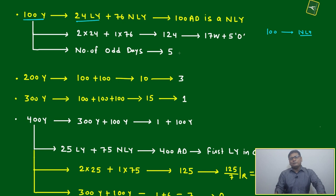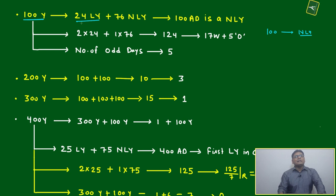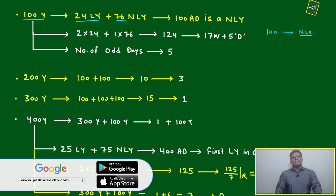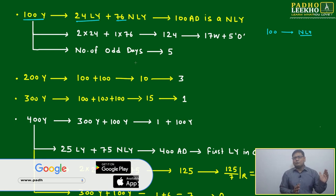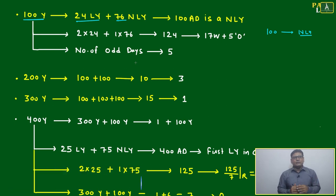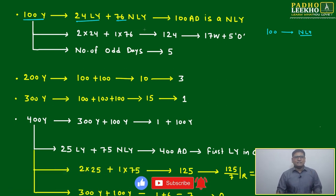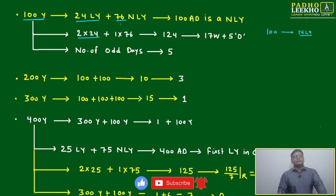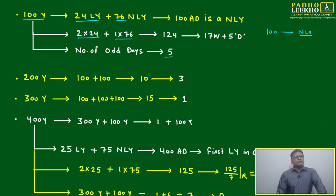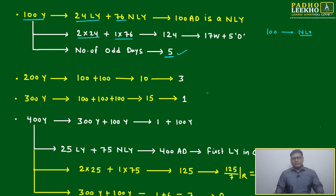Starting from 1 AD: first 100 years have 24 leap years and 76 non-leap years. Multiply: leap years — 2 × 24 = 48; non-leap years — 1 × 76 = 76; total odd days = 48 + 76 = 124. Dividing 124 by 7 gives remainder 5. So the first 100 years have 5 odd days.